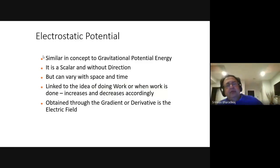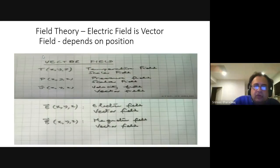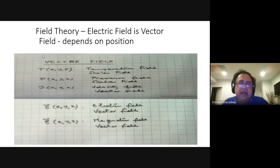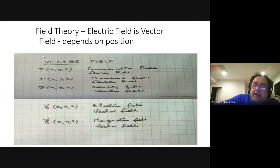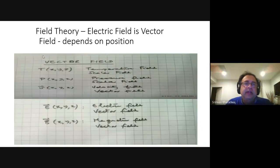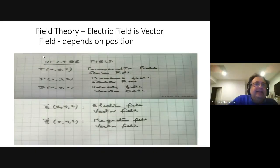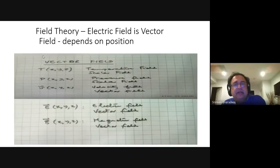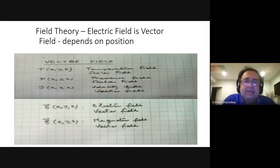When we say field, it is something which is a function of position. At any position you can have two kinds of fields. A vector field has both magnitude and direction — at every XYZ there will be a magnitude and direction. For electrostatic potential, at every point there will be just a scalar value, which is again a function of position. For example, V = X² + Y² + Z² at point (X, Y, Z) is a scalar, whereas the electric field would be X²i + Y²j + Z²k — a vector.